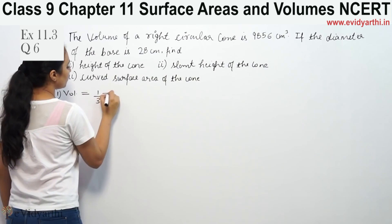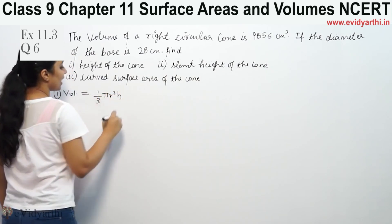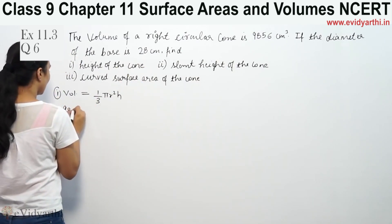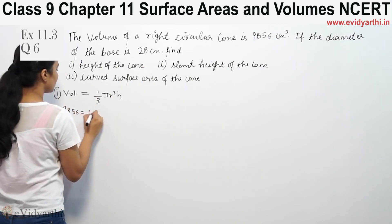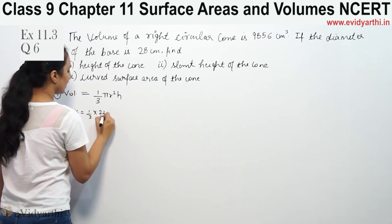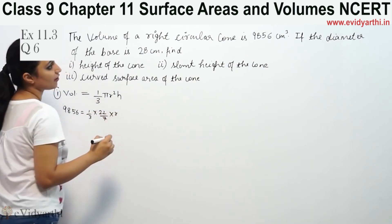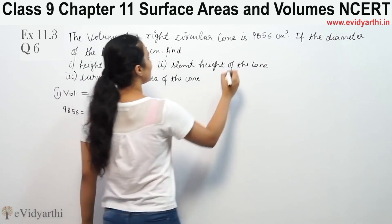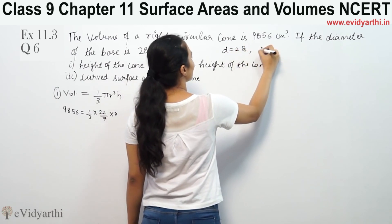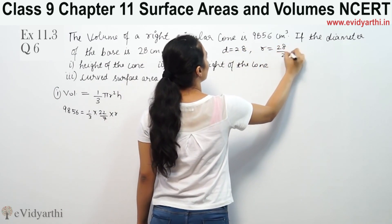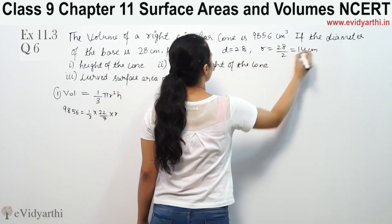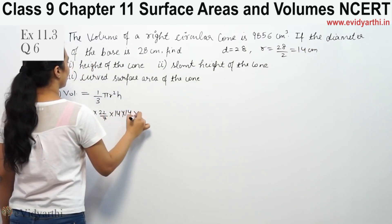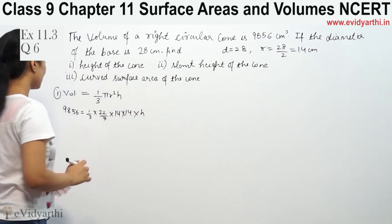The volume of a cone is 1/3 πr²h. Volume of the right circular cone 9856 is equal to 1/3 into 22/7. We are finding the radius of base. Diameter is equal to 28, so radius is diameter by 2, that means 14 cm. Radius is 14 into 14. We have to find the height.